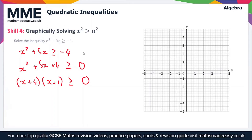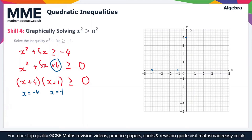Again we're going to draw the graph based on this information. The quadratic has a constant of plus 4, so it crosses the y-axis at plus 4. The roots are at x equals minus 4 and x equals minus 1, which are the points where the graph crosses the x-axis. We draw a symmetric curve crossing through each of these points.